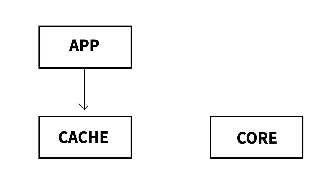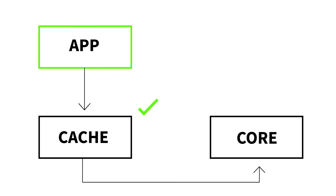Number five is write only caching. Write only is just like write back — it writes to the cache and periodically flushes to the core — except reads will never get promoted to the cache. So it truly is only ever a write cache. If you really need to speed up writes and don't want reads filling up your cache device, this is the method you'd want to use.